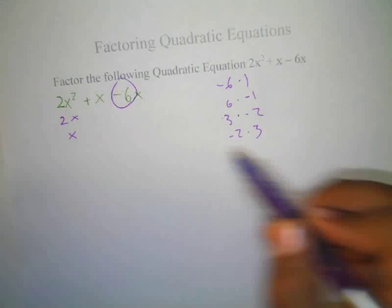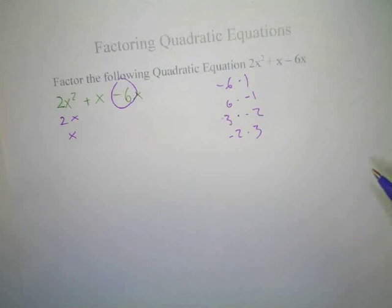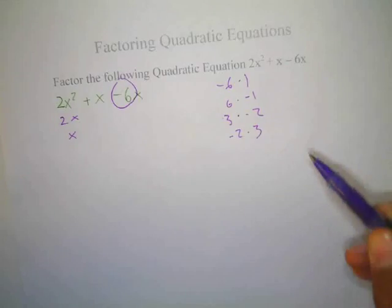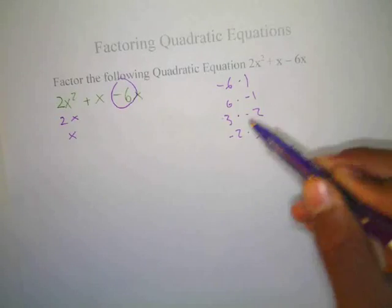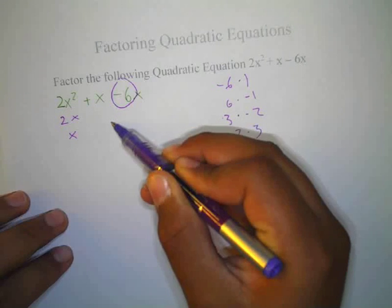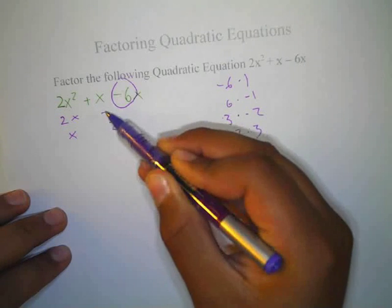So I'll choose negative 2, positive 2, and negative 3. So we have positive 2 here and negative 3 here.